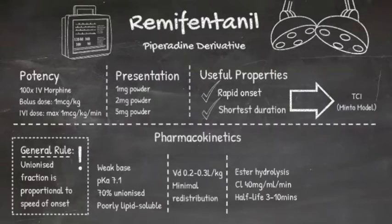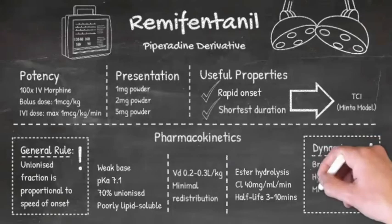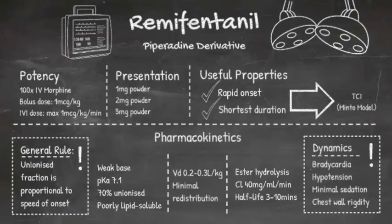You just need to provide the syringe pump with the patient's age, sex, weight, and height. There are some extra pharmacodynamic effects pertinent specifically to remi, including bradycardia and slightly reduced myocardial contractility, so you may note a drop in blood pressure. It is only minimally sedative and hypnotic, so you can use it to perform awake fibre optic intubations, but you should also be aware it is known to cause chest wall rigidity, which can interfere with ventilation.